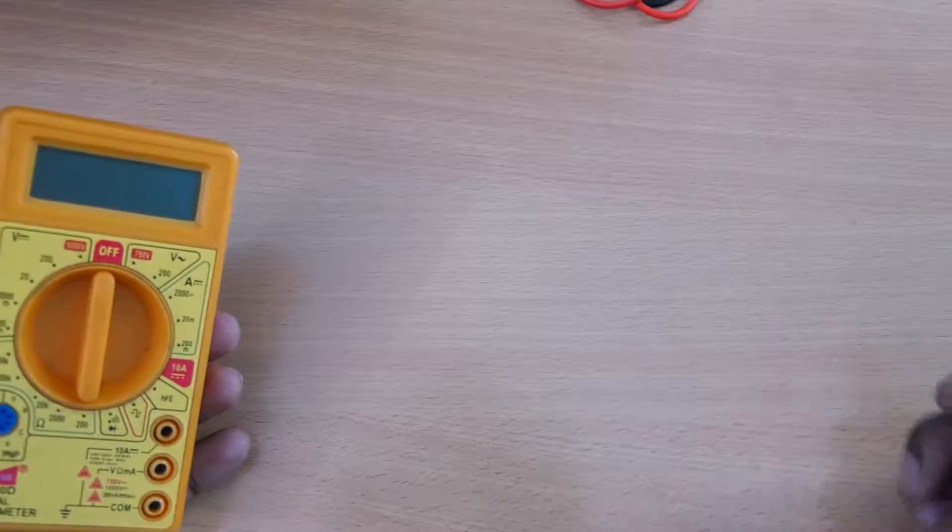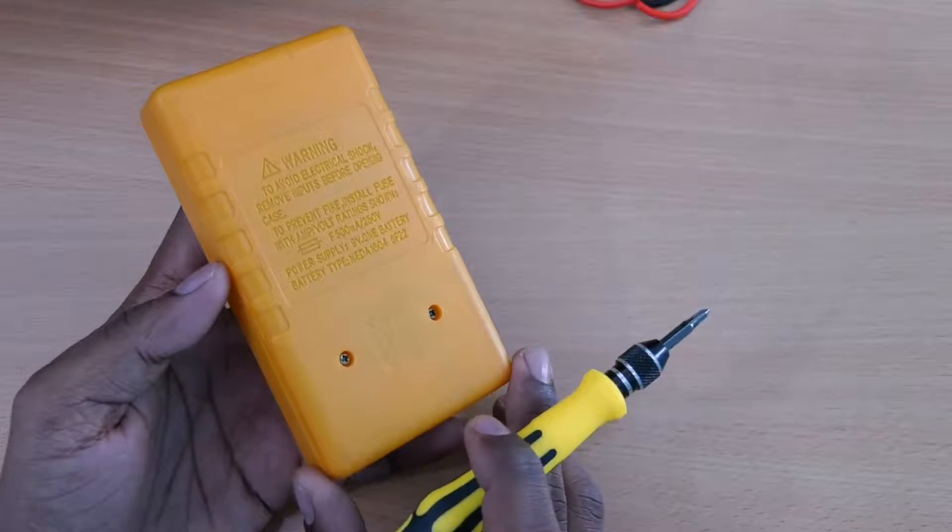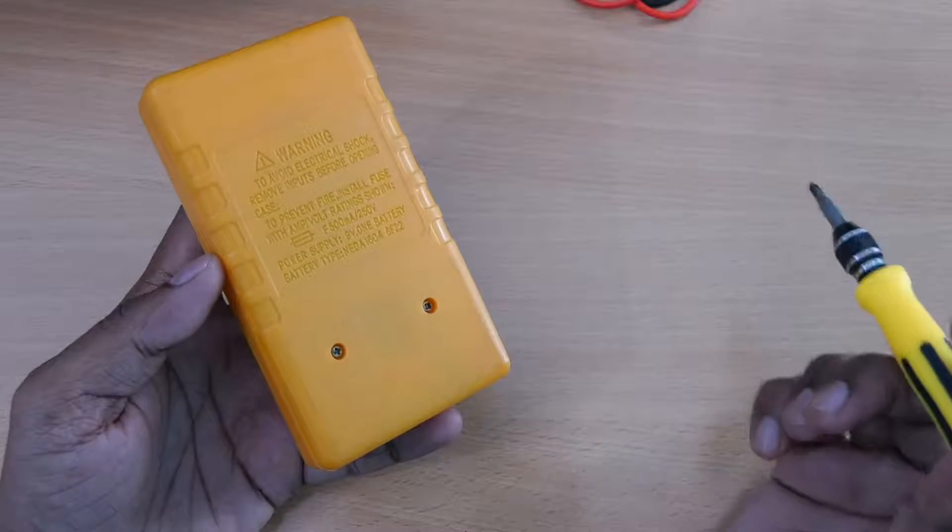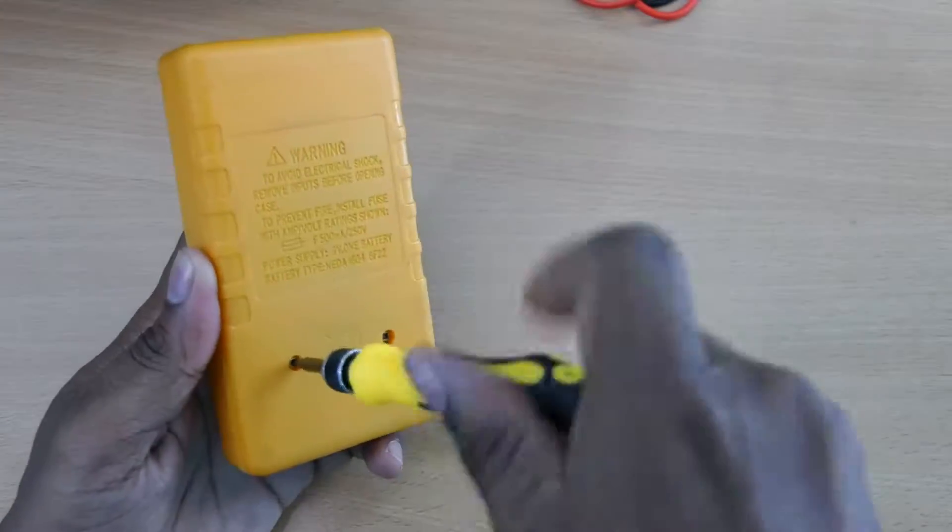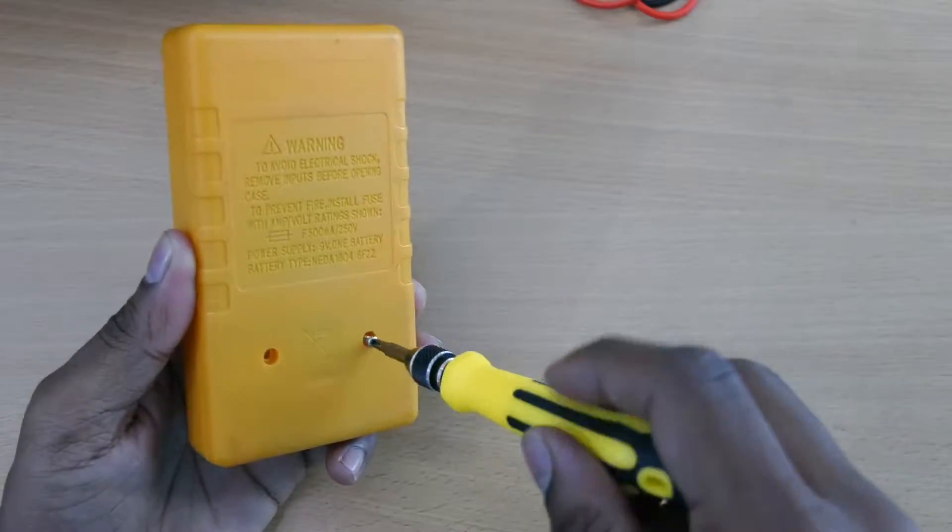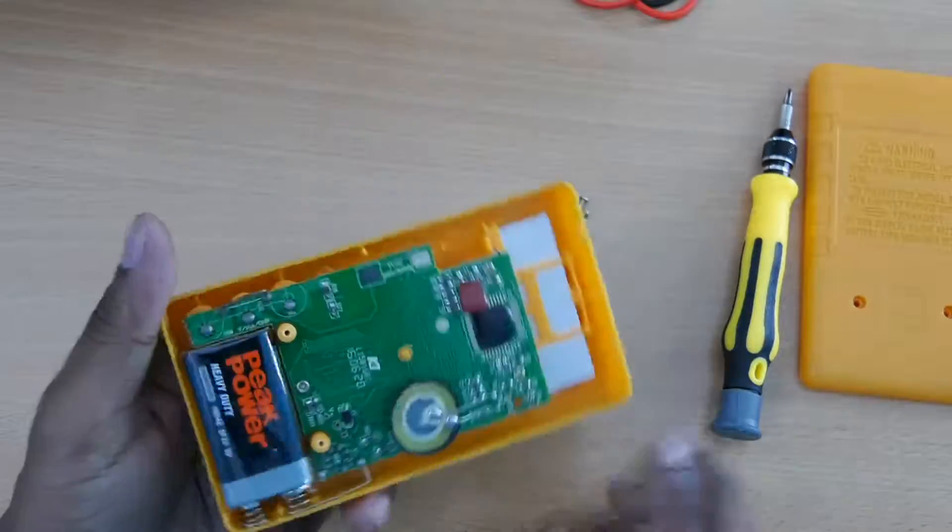So in this video we will add a fuse to it. First we have to open this multimeter. It has two screws in the back. Unscrew them and remove the back cover. Now in the PCB you will see there is a place for the fuse.